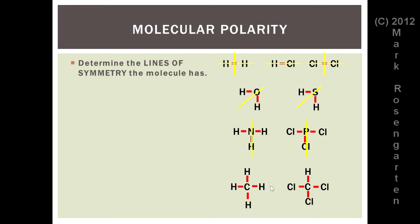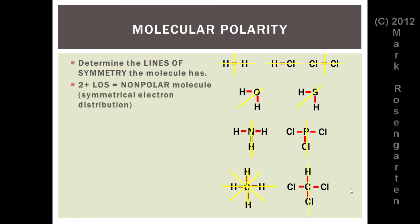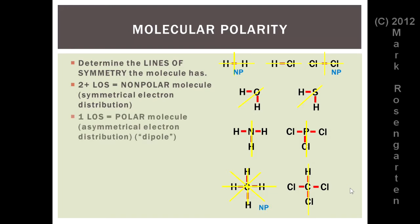Methane, on the other hand, can be sliced in multiple directions — that way, or that way, or that way, or even that way. But trichloromethane can only be cut in one direction. Two or more lines of symmetry means that the electrons are distributed symmetrically around the molecule, meaning that no side has greater electron pull than the other. This makes the molecule nonpolar — any molecule with two or more lines of symmetry is a nonpolar molecule.